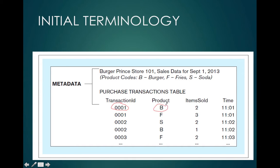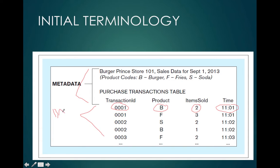With metadata, we can now see from the previous slide that '0001' is a transaction ID, 'B' is a product, another value is the amount of items sold, and '1101' is indeed the time. Metadata gives us the information on how to interpret the data — it helps us determine what the data actually is.